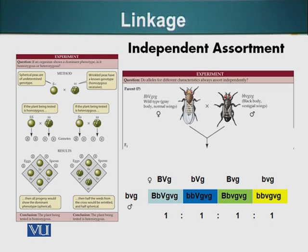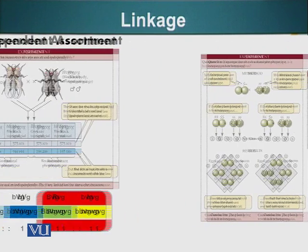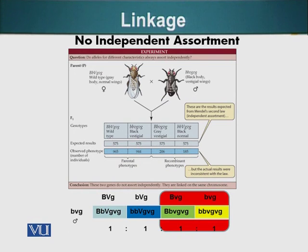This is not the result Morgan got — he got something different. This is the result of Morgan's experiment. The expected result, if these genes were assorting independently, would give progeny with a ratio of 1 to 1 to 1 to 1. The observed phenotypes were as follows. As you can see on the screen, I have highlighted them. Pretty much it was 1 to 1 between the parental phenotypes — that is, gray body with normal wings, and black body with vestigial wings. What is more interesting is that a small number of individuals had non-parental phenotypes.